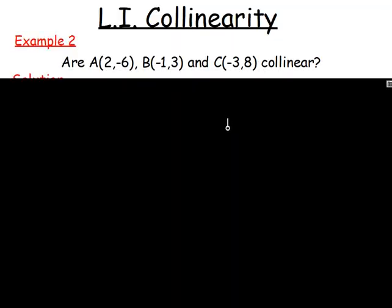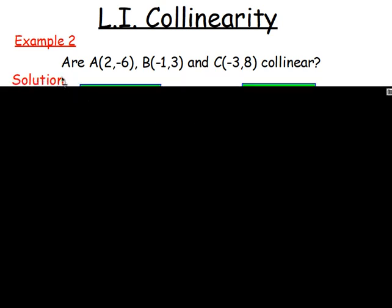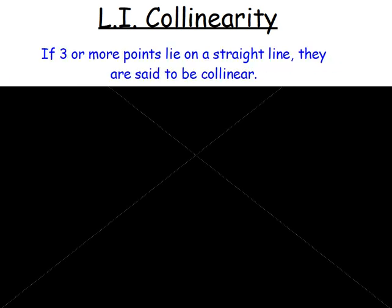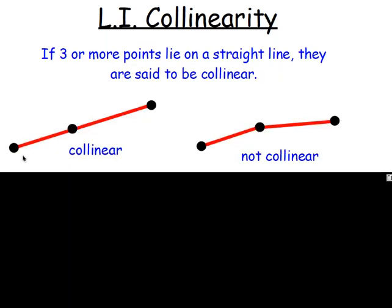Example two then. Moving on. So second example, this time, are the points A, B, and C collinear? So this time they might be or they might not. Again, if they are collinear, you'd be expecting the gradients to be the same. That's a common point.